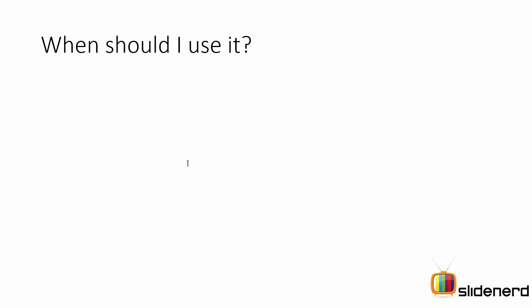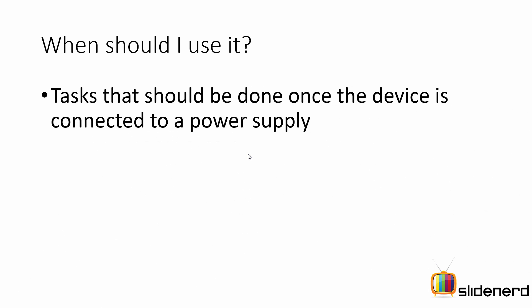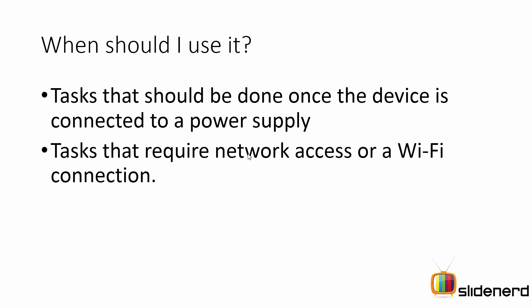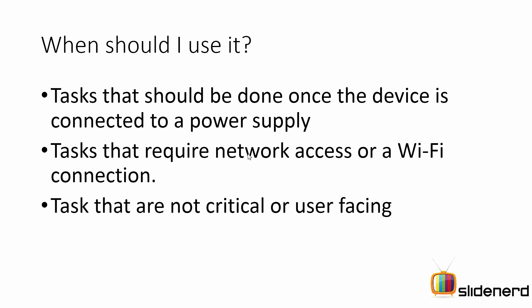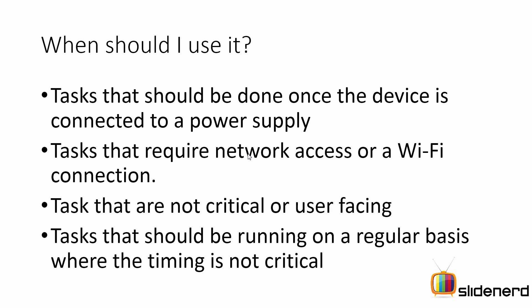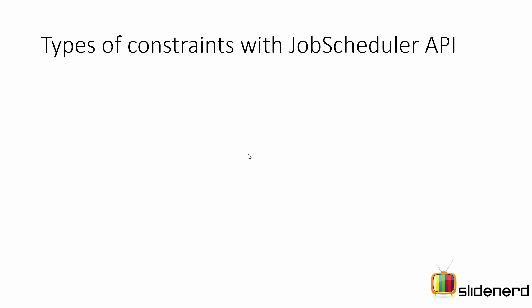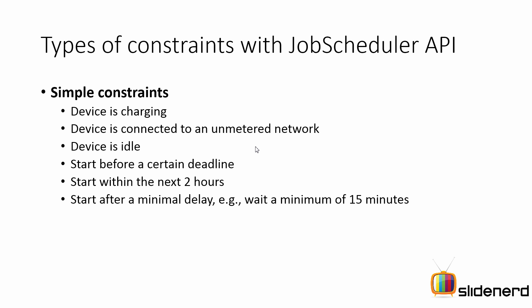Let's take a look at what kind of stuff can happen with the Job Scheduler — when to use it. First, the task you want to run should require a battery supply. Or you want to ensure that you run the background task when there is network or Wi-Fi access. Or the user does not interact with the task and you want to run your Job Scheduler. And most importantly, you want to run something again and again every 20 minutes and timing is not that critical. There are simple and complex constraints you can specify.